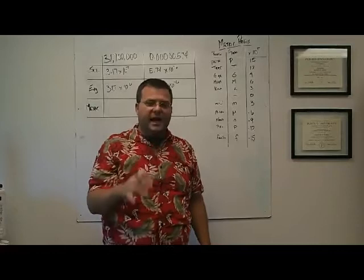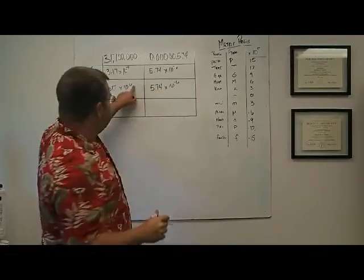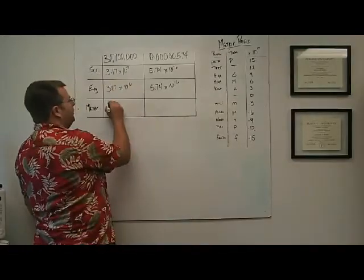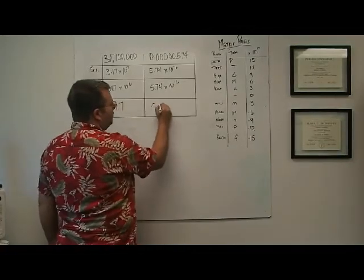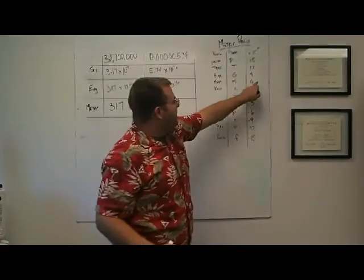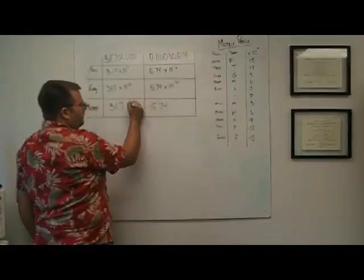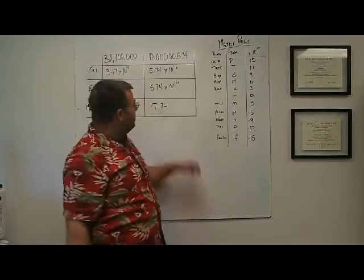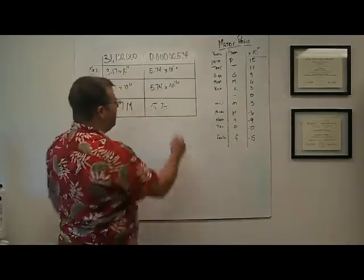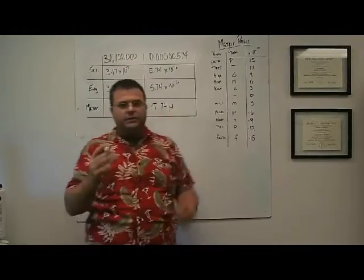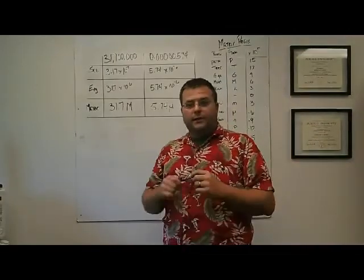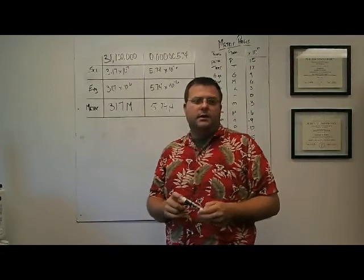Now, how do we write this with metric prefixes, which is really how we do it in electrical engineering? For 31.7 times 10 to the sixth, we look at our metric prefix list — 10 to the sixth is 'mega,' so we write 31.7 mega-whatever the unit is. For 5.74 times 10 to the negative sixth, the prefix is 'micro' — written as the Greek letter mu with a little extra tail — so it's 5.74 micro-whatever the unit is.